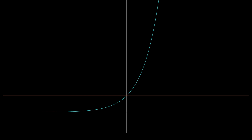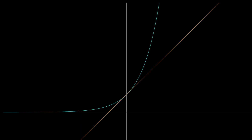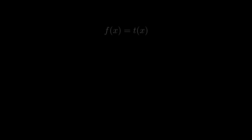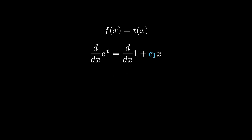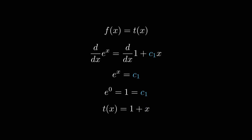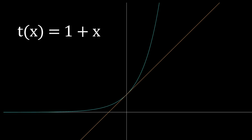Our next step is to get the initial rate of change to match up — that is, to create a tangent line at x equals 0 that matches up with e to the x. We can add some factor of x. To get the rate of change to match up we set the first derivatives equal to one another: the derivative of e to the x must equal the derivative of t of x. T of x is 1 plus some constant times x. Taking the derivative of both sides we get e to the x equals our constant, and at x equals 0 that's 1. Hence t of x equals 1 plus x.